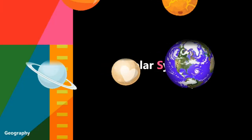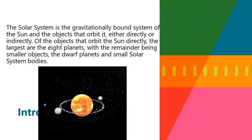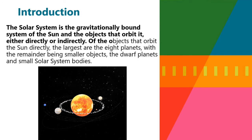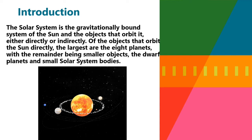Solar System - Grade 6 Project. Introduction: The Solar System is the gravitationally bound system of the Earth and the other objects that orbit it, either directly or indirectly. Of the objects that orbit the Sun directly, the largest are 8 planets, with the remainder being small objects. The dwarf planets are small solar system bodies.